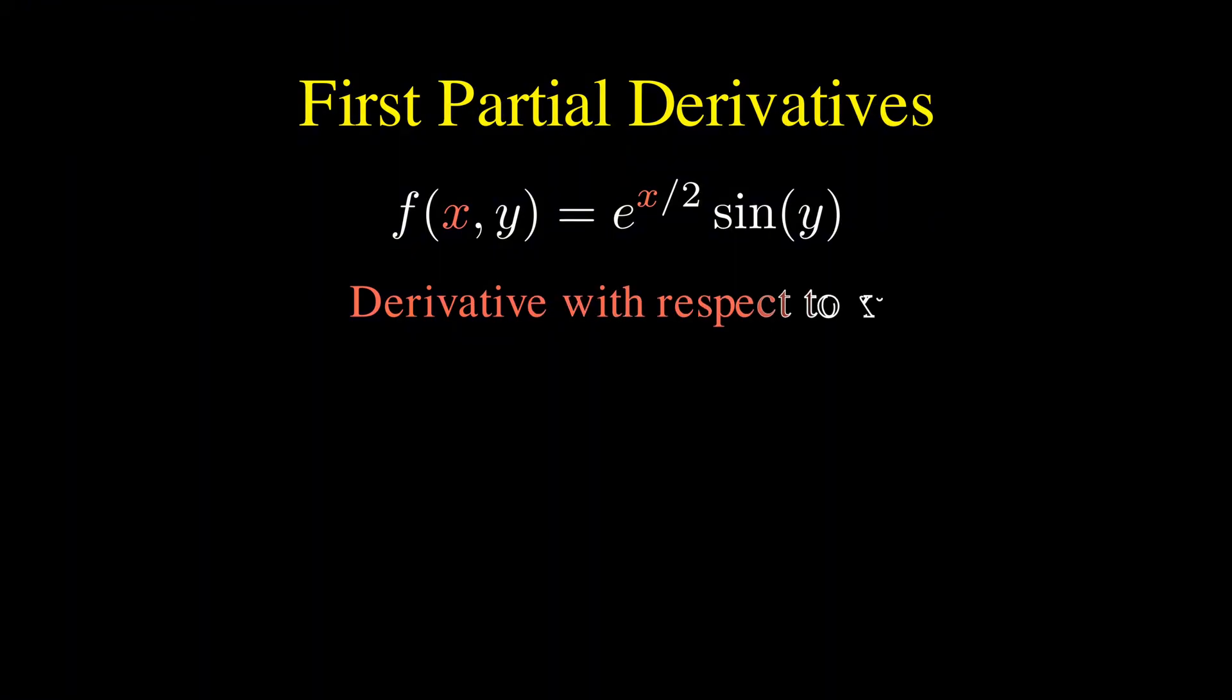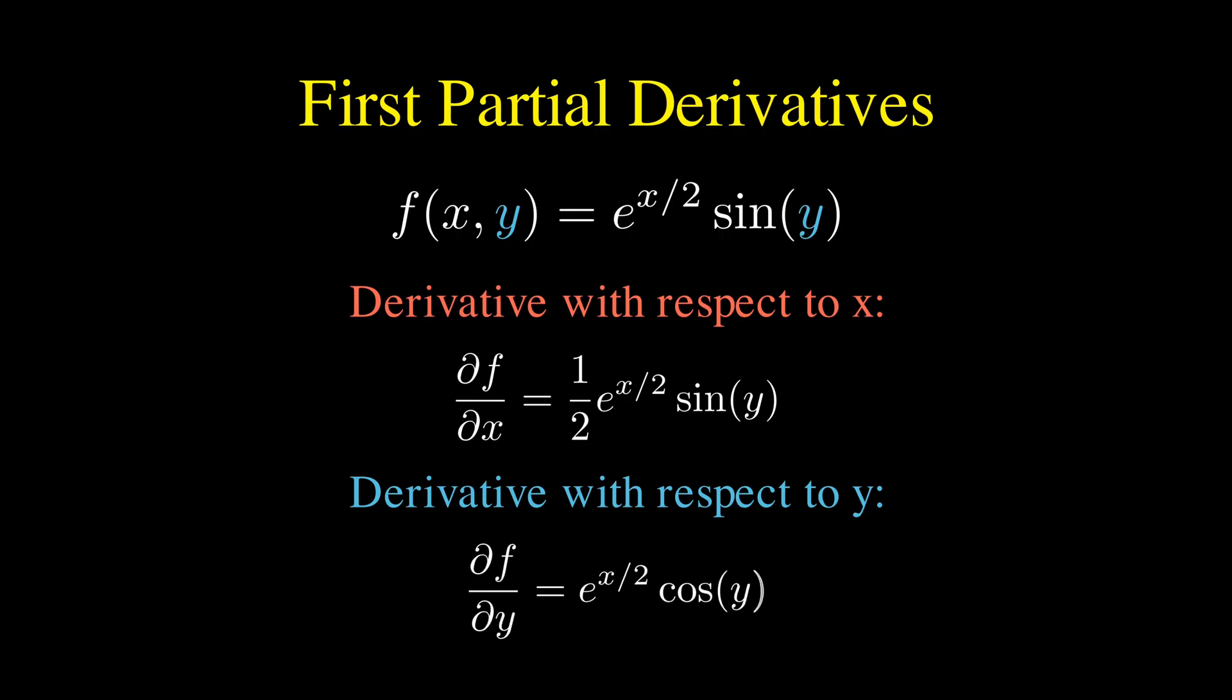The partial derivative of f with respect to x gives us one-half e to the x divided by 2 sine of y, because we bring down that one-half coefficient from the exponential and the partial derivative with respect to y gives us e to the power of x divided by 2 cosine of y, because the derivative of sine is cosine.